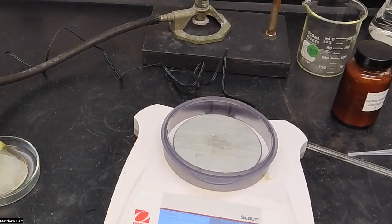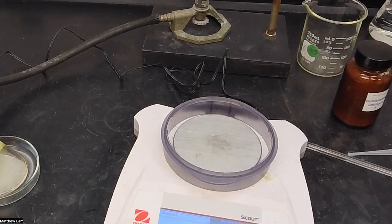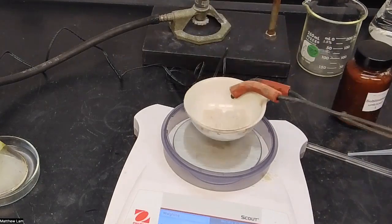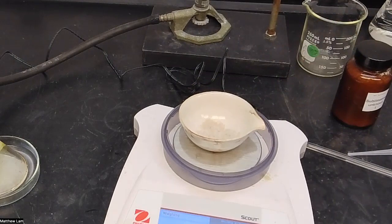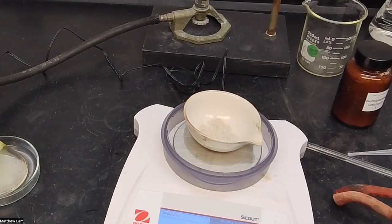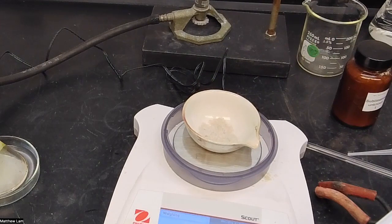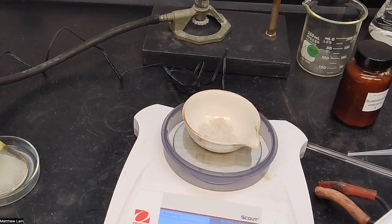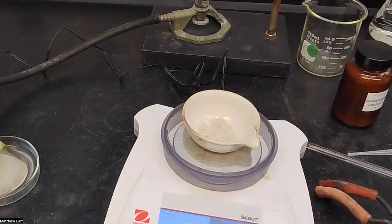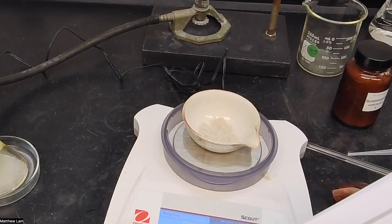Then we want to take this off, and we want to weigh out the evaporating dish with residue after sublimation. We're going to take this evaporating dish up here, bring it down here, and weigh it. That weight is 50.344 grams after it was sublime.